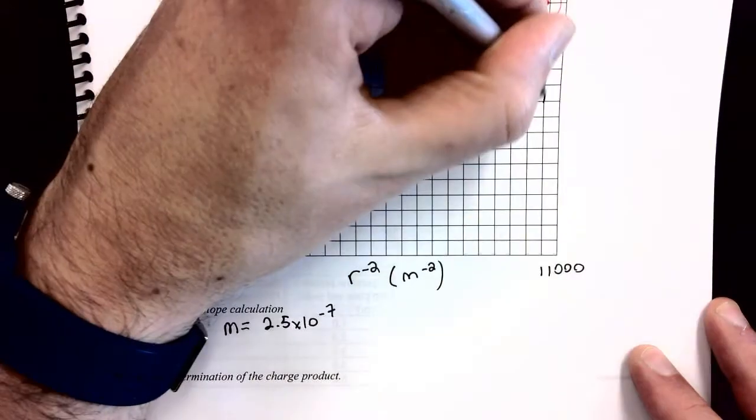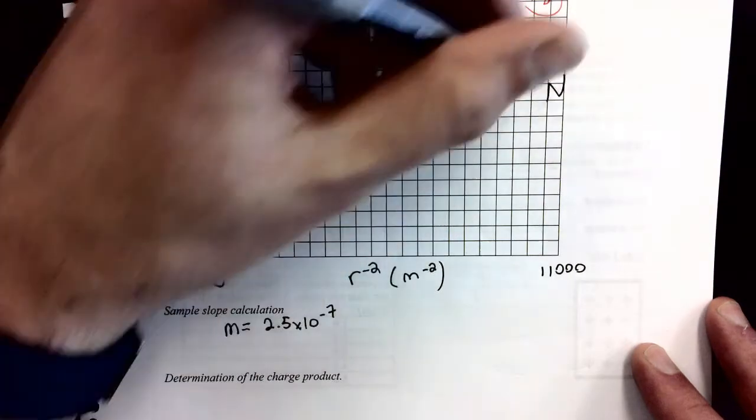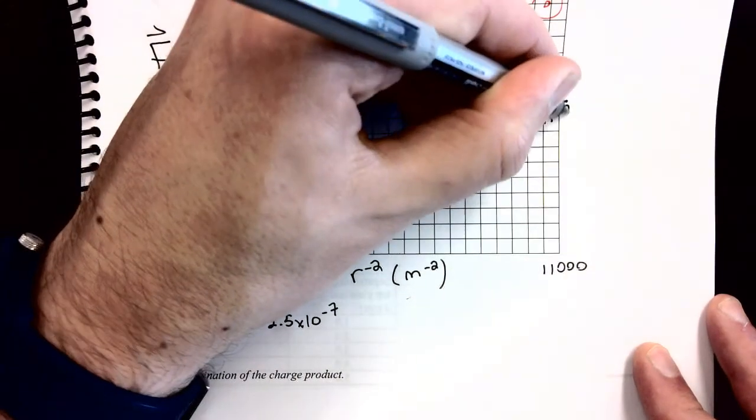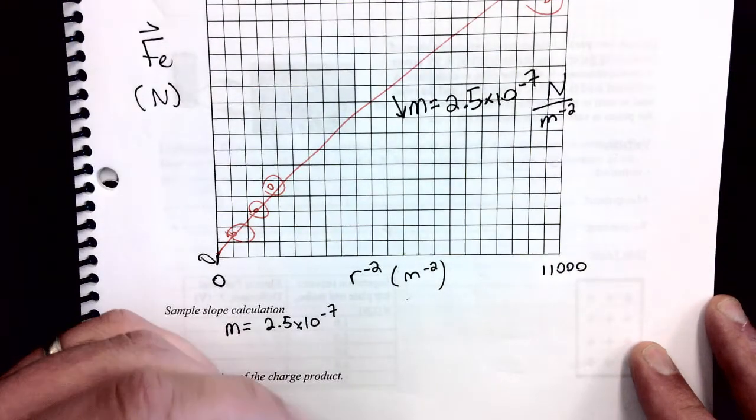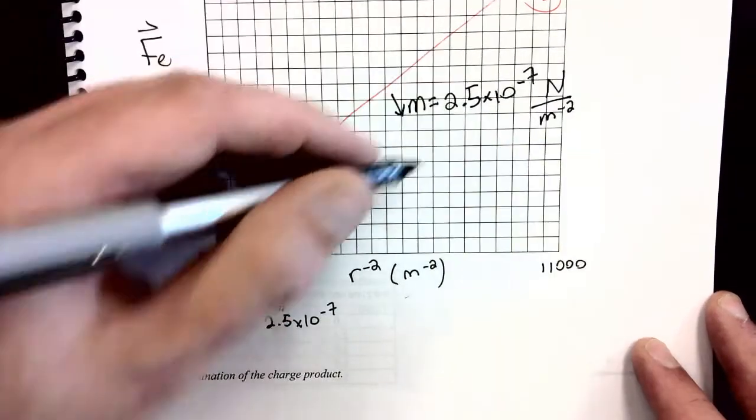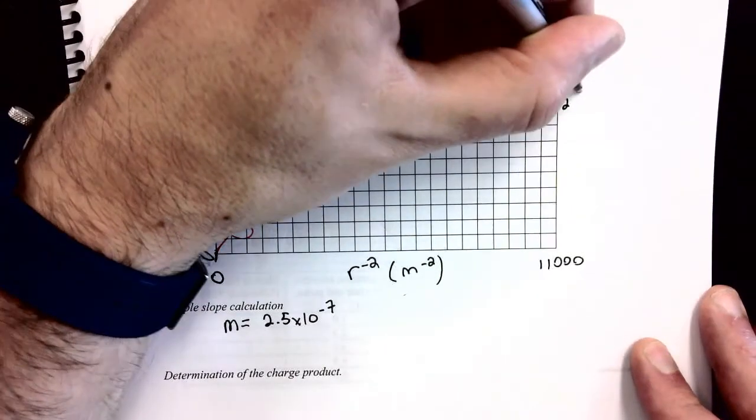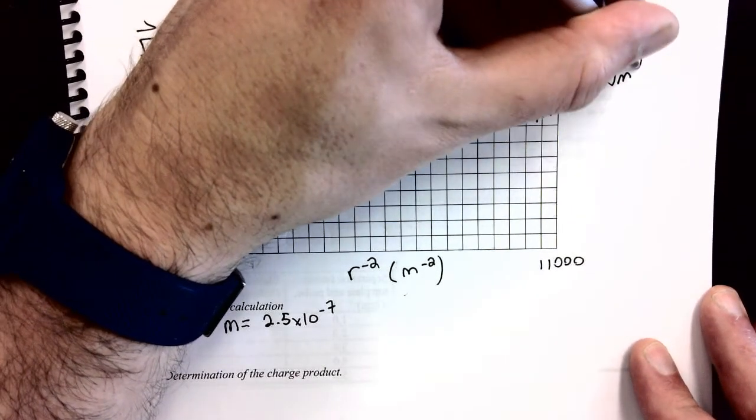Your lab manual actually has a spot for you to do your slope calculation. But we did it on the calculator. So there's no need to actually fill in any work there. I'll just write the slope down again because it's kind of convenient. The units of the slope are newtons over meters to the power of negative 2, because the slope is rise, which is measured in newtons, over run, which is measured in meters to the negative 2. And you can simplify that unit down. A newton per meter to the negative 2 is the same as a newton meter squared.